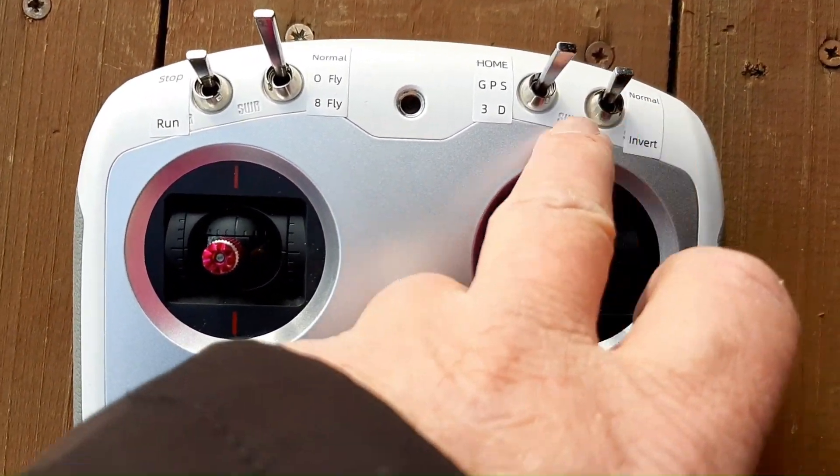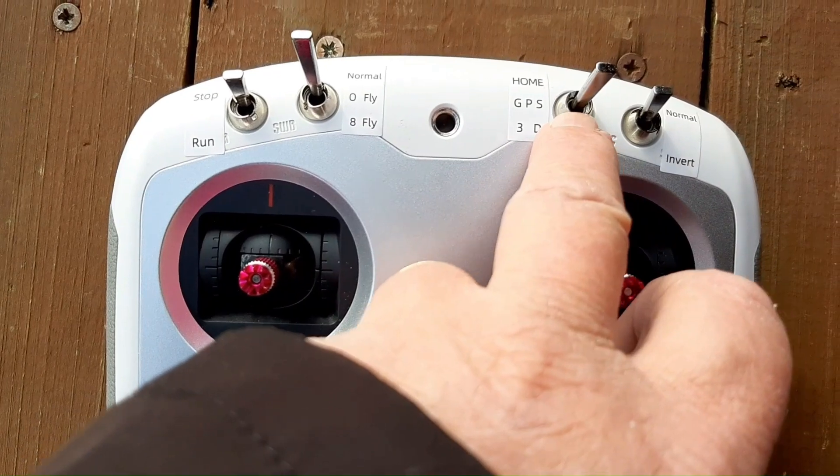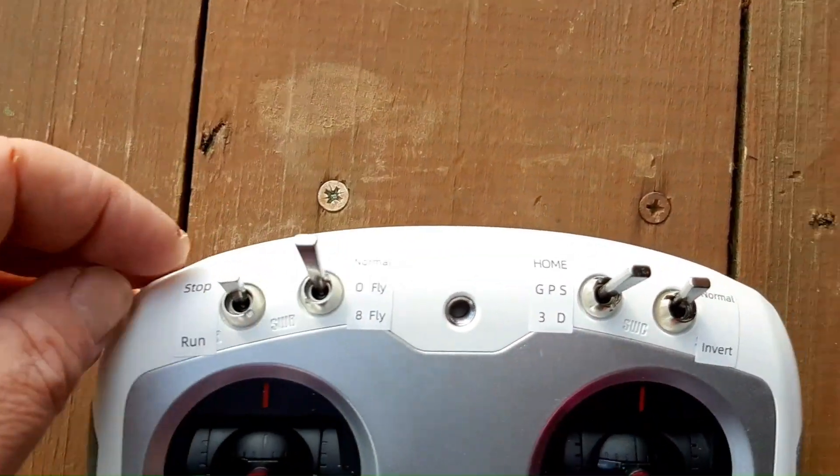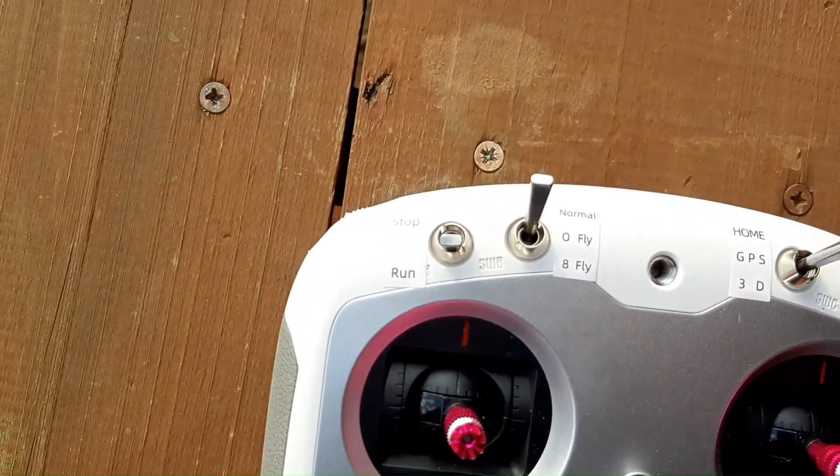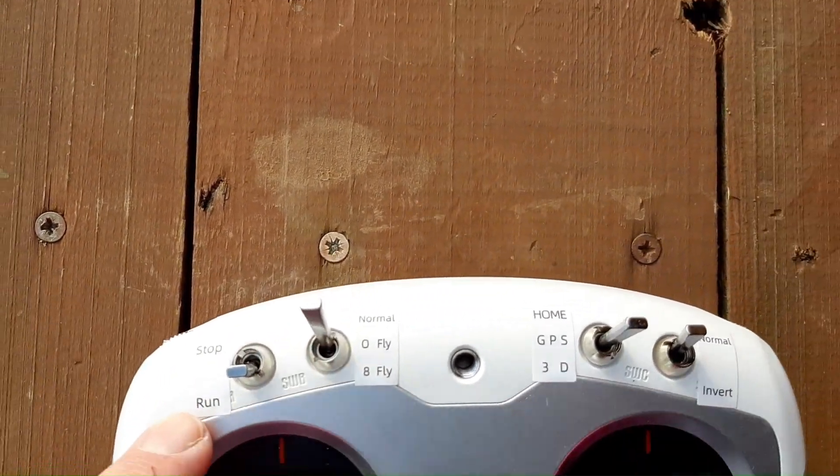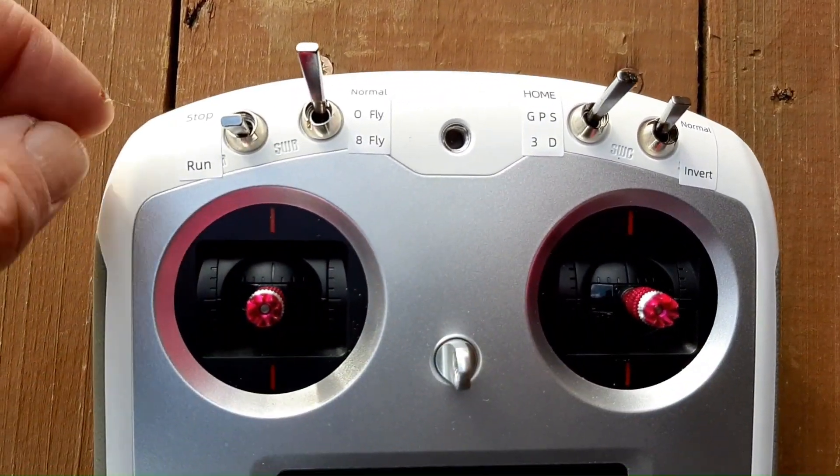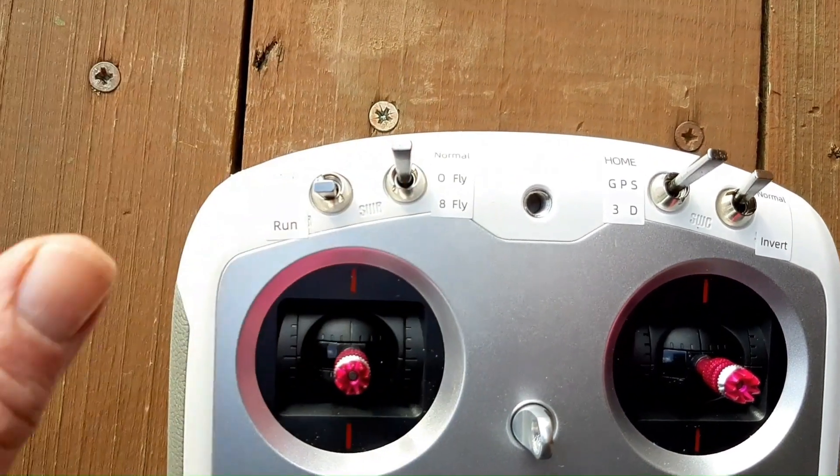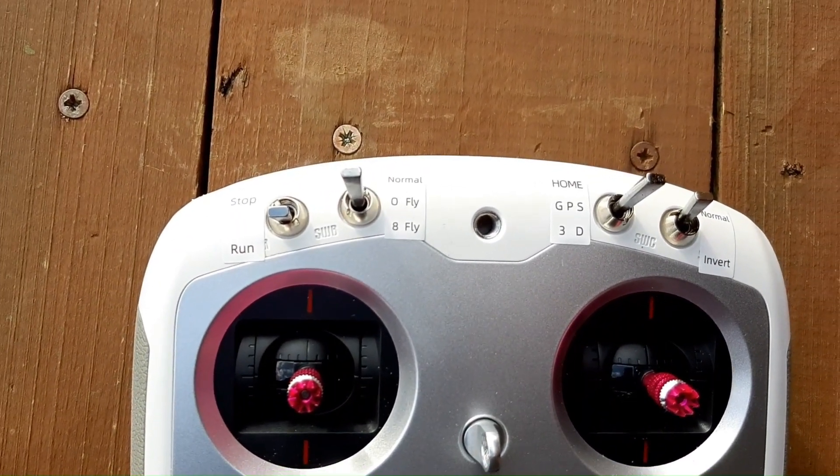Just to clarify exactly what happened: the heli was in normal mode, obviously not inverted because it was flying normally, GPS was on, and the heli was in run mode like here. I had that switch on the orbital mode.